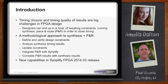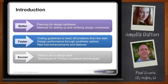Give me an overview on how I can bust out of this loop and still get good quality results. We like to think of it as doing better, faster, and sooner. You want to do better planning for your synthesis designs and have better methods for setting up and verifying your constraints. For faster performance, there are coding guidelines to head off problems from the start, plus various synthesis options. And sooner means getting sooner design delivery by correlating your timing results with your synthesis place and route results.